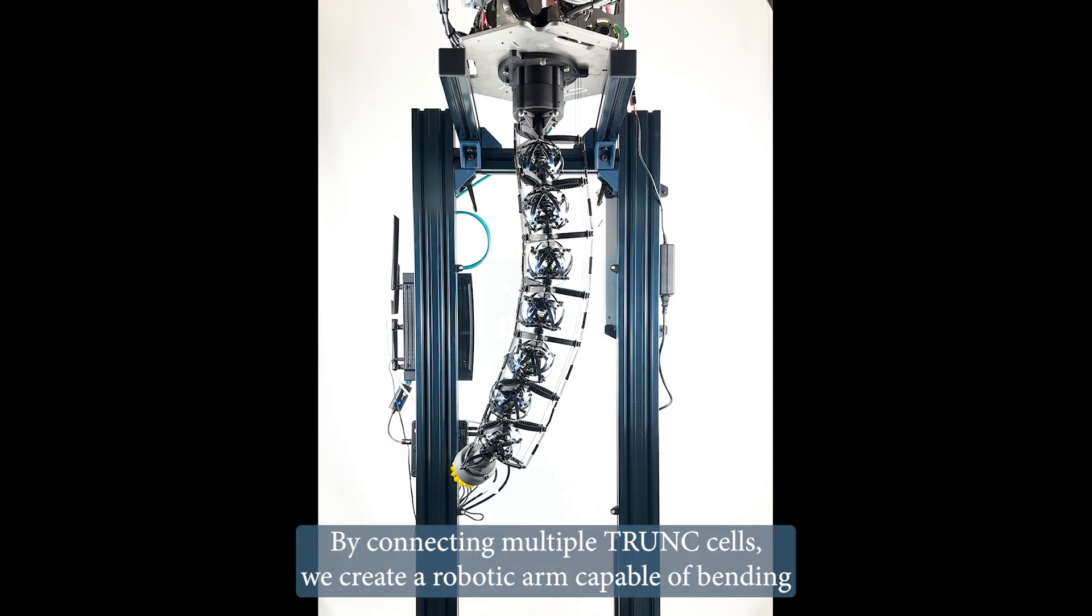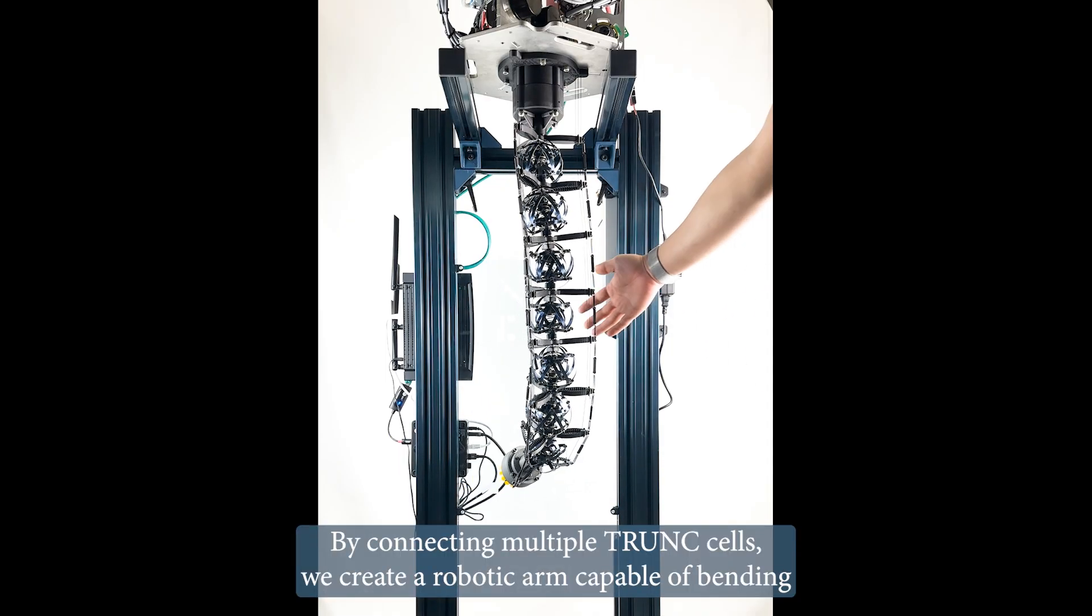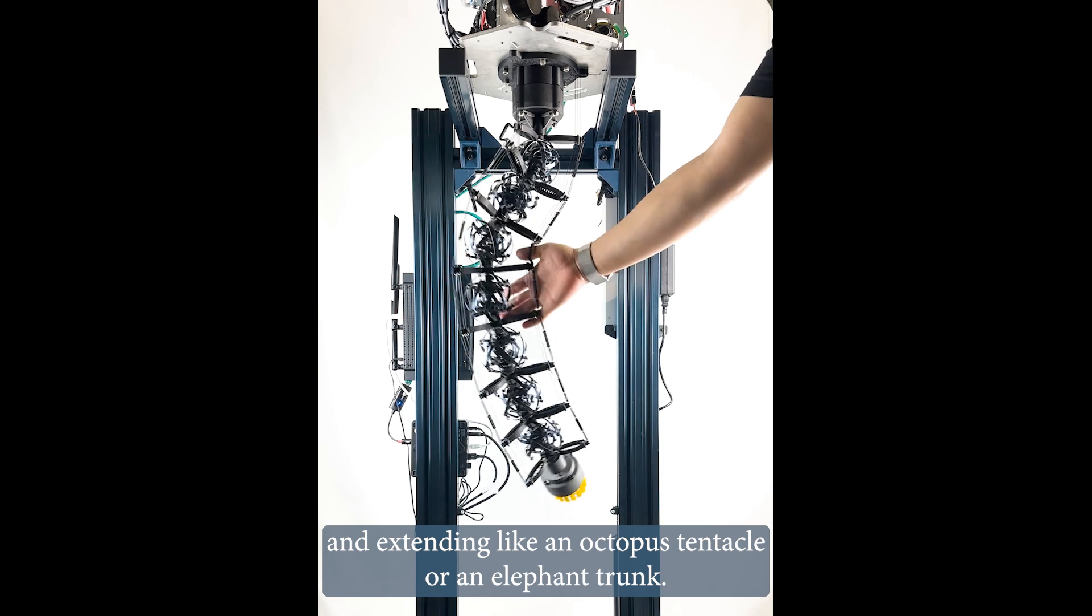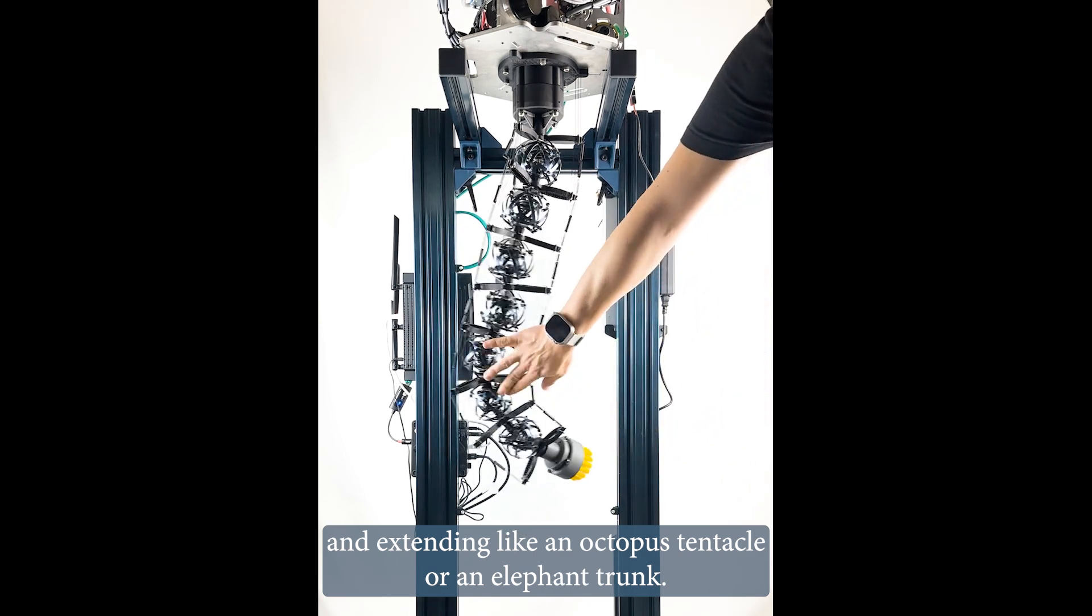By connecting multiple trunk cells, we create a robotic arm capable of bending and extending like an octopus tentacle or an elephant trunk.